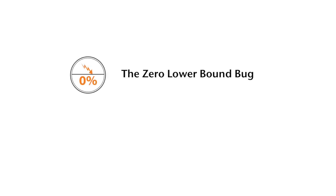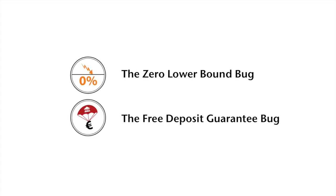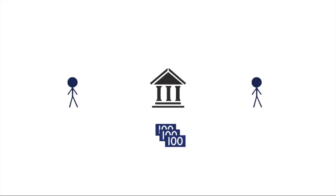Our monetary system has two major bugs: the zero lower bound of interest rates and the practically free deposit guarantee. But to understand these, we first need to set straight some popular misunderstandings regarding our current banking system as well as money and interest in general.